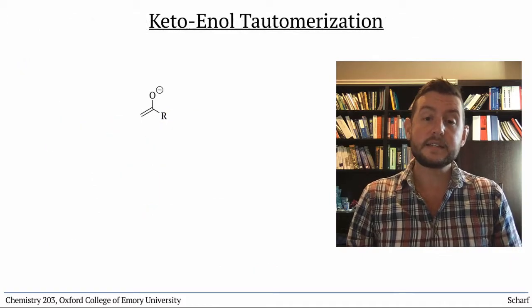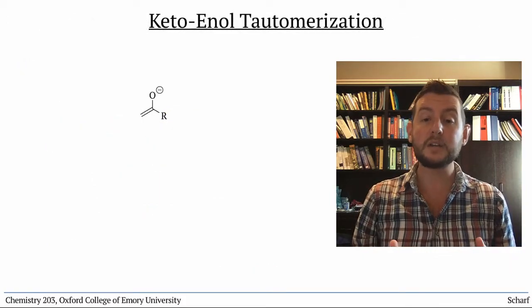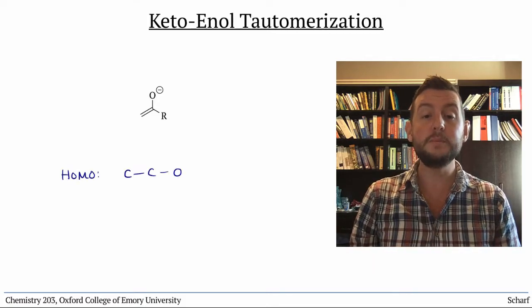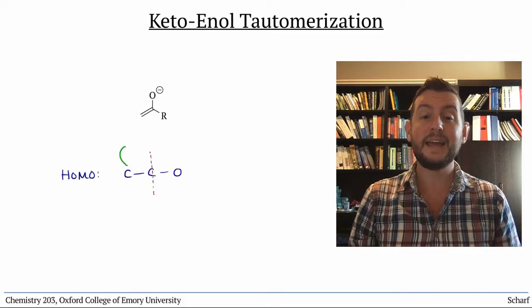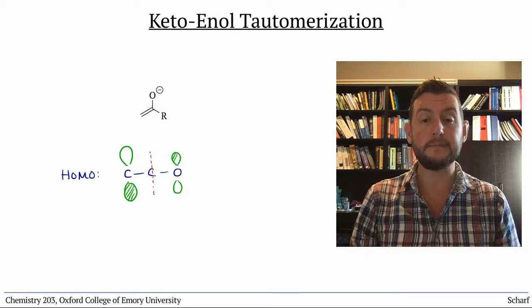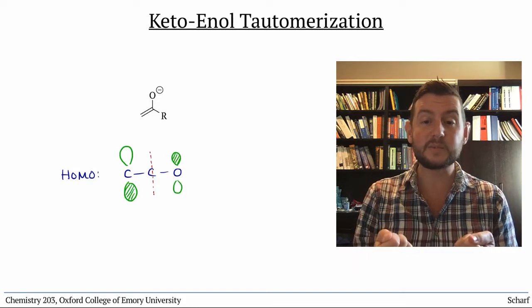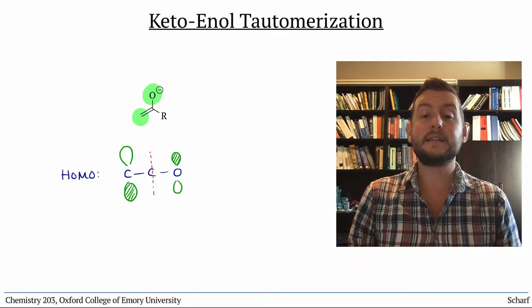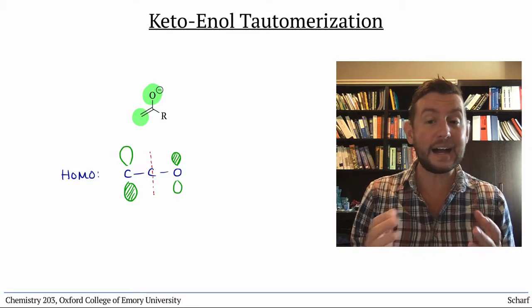The enolates that form from this acid-base reaction are conjugated systems whose HOMOs have lobes at both the oxygen and the alpha carbon, the two sites where the negative charge is localized. This means that enolates can react with electrophiles at either site.